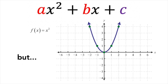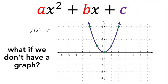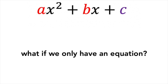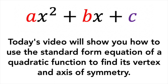But what if we don't have a graph? What if the only thing we have is the equation? Well, that is what we are going to be talking about today. Today's video will show you how to use the standard form equation of a quadratic function to find the vertex and the axis of symmetry.